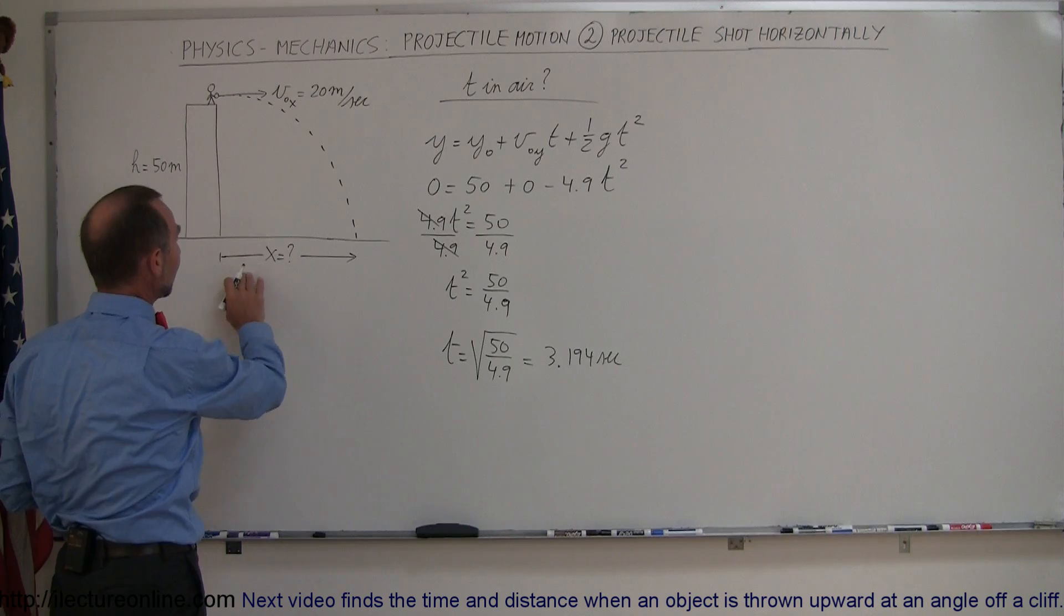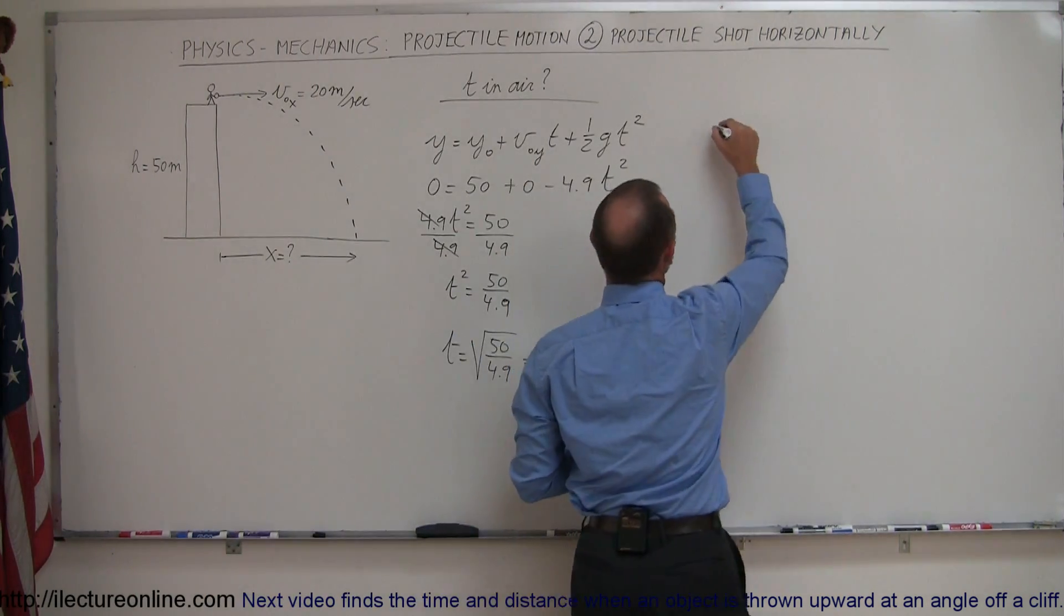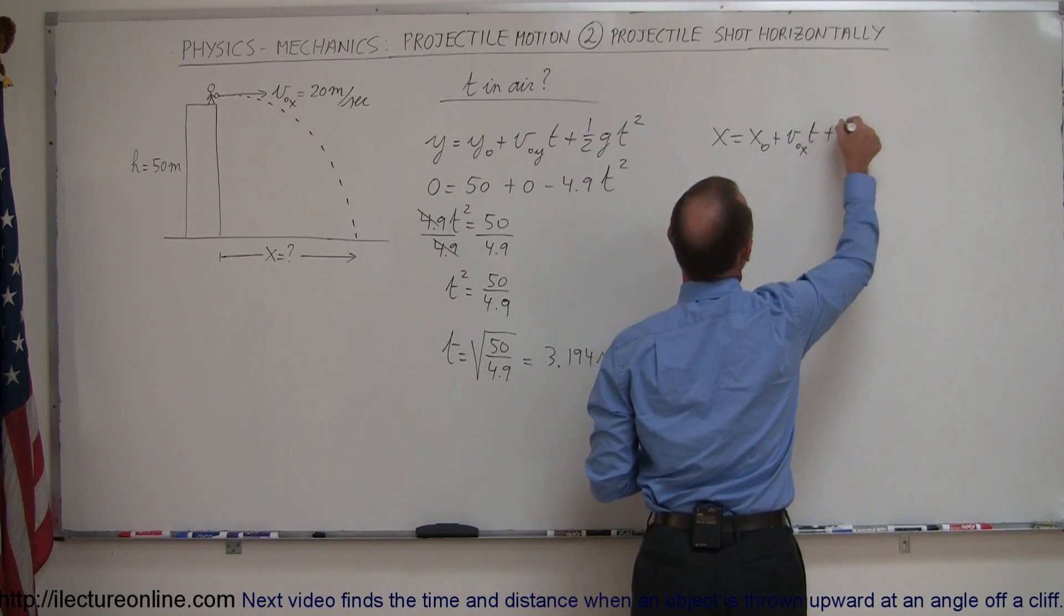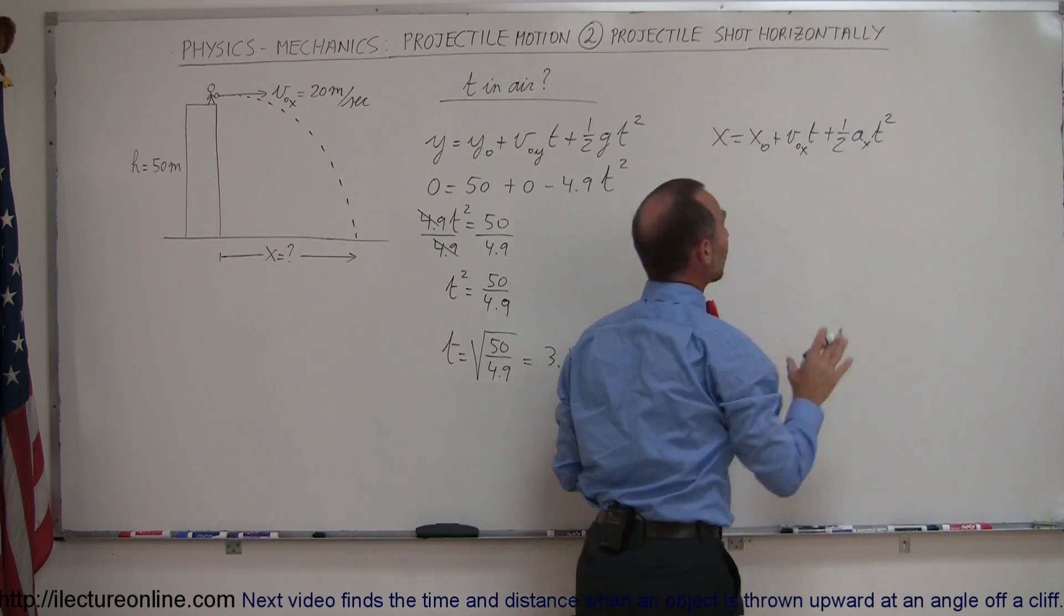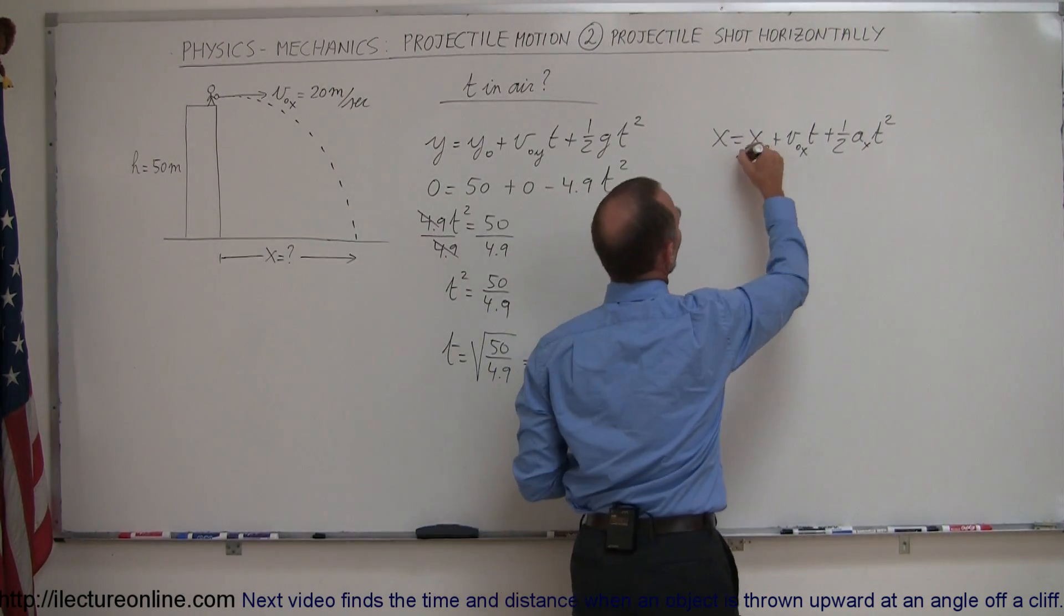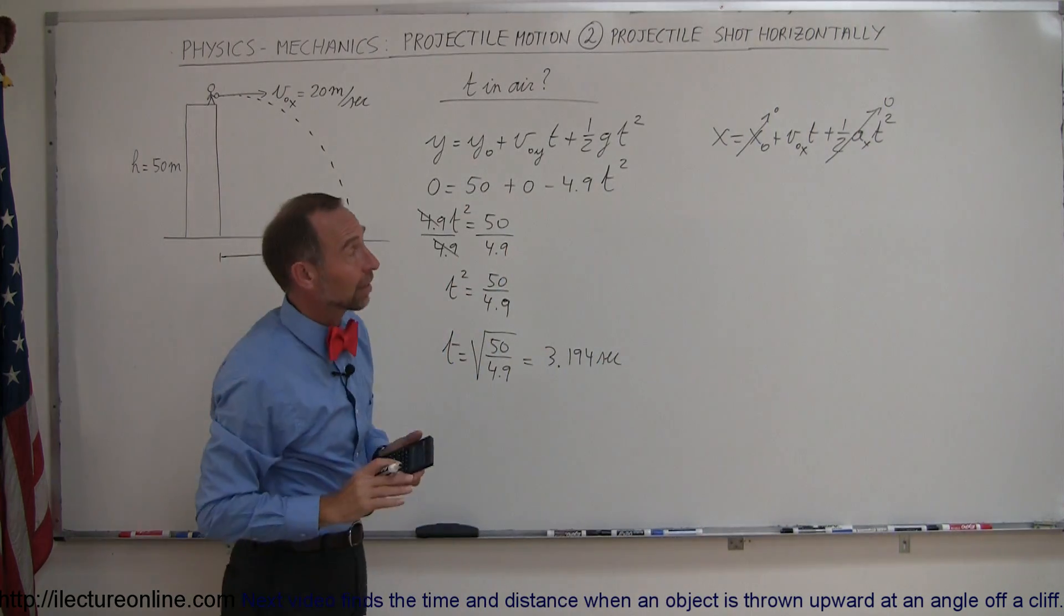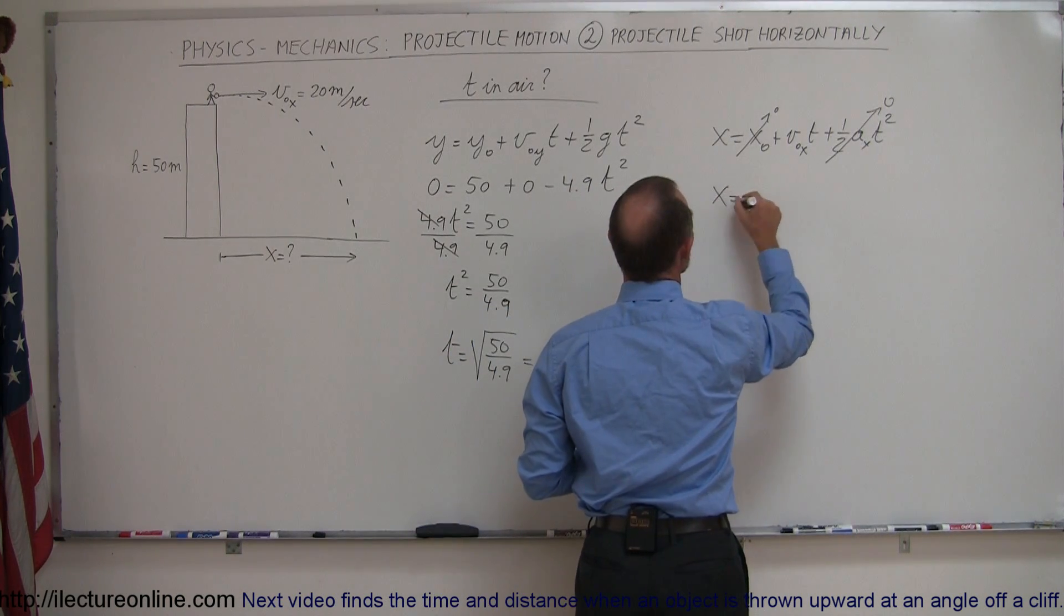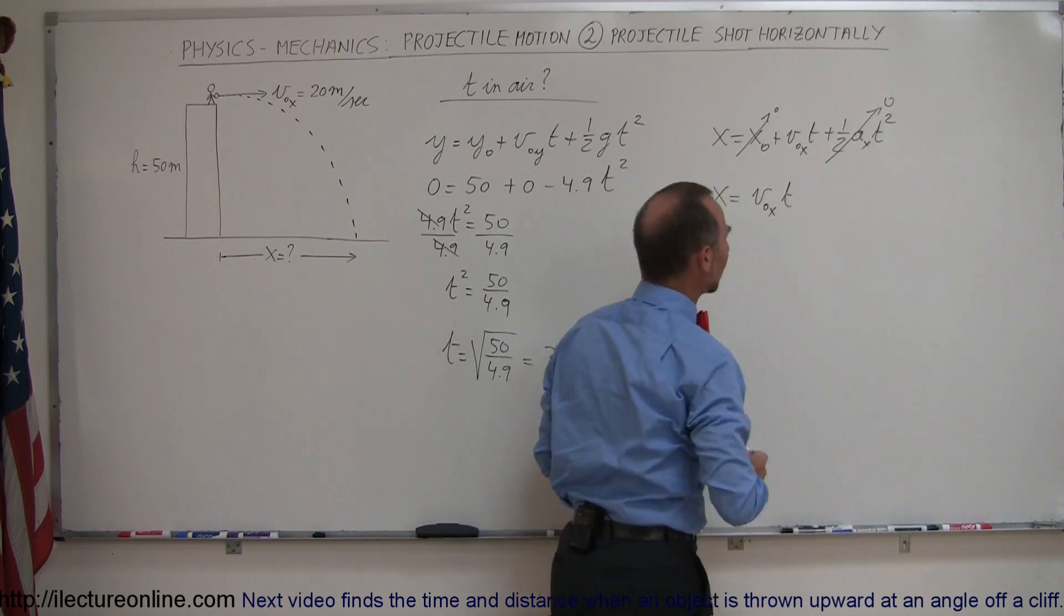So secondly, now we need to figure out how far the object travels. So now we need the very same equation as this in the x direction. I have x equals x sub nought plus v sub nought in the x direction times time plus one-half a in the x direction times t squared. Now notice, since we assume x sub nought to be right here at the starting point, we can call this zero. And since there's no acceleration in the x direction because there's no forces acting in the x direction, that goes to zero as well. And we simply get the equation that distance x equals velocity times time.